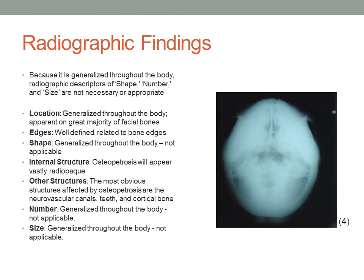Radiographic findings of this disease are tough to categorize via the lesion acronym due to its systemic nature. Location is generalized and should be apparent in most facial bones. Edges are well-defined. The shape descriptor is not applicable, as this is systemic in nature, and the internal structure is sclerotic and vastly radio-opaque, which is evident from the radiograph on the right. From a dental perspective, the most affected structures are the inferior alveolar nerve canal and cortical bone trabeculation. Teeth may be displaced. Number and size are not applicable, as it is systemic in nature.